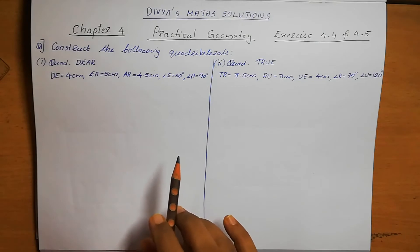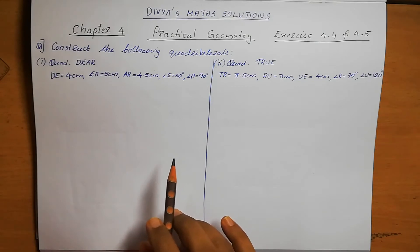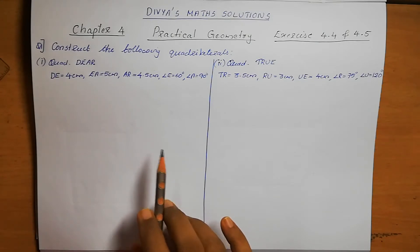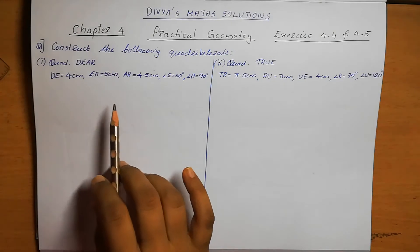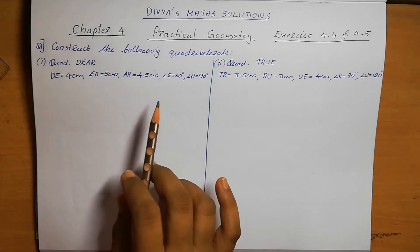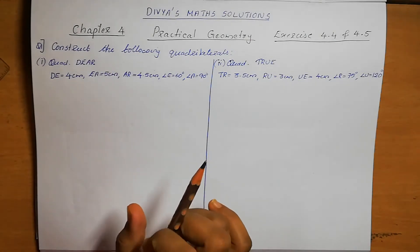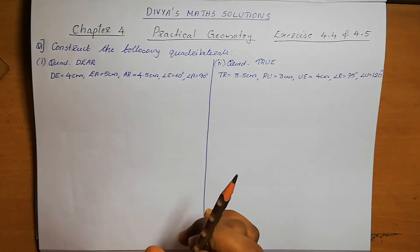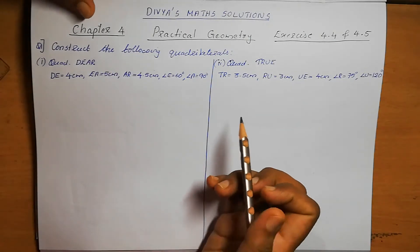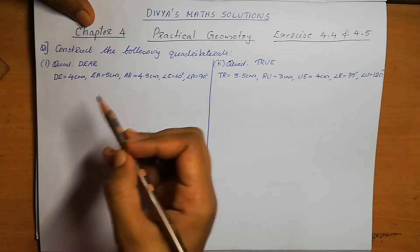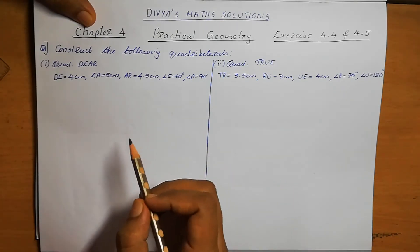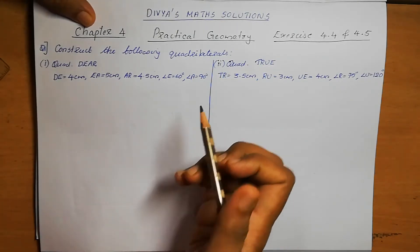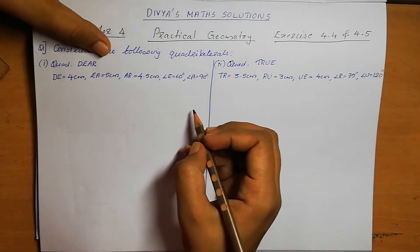Exercise 4.4, Question number 1: construct the following quadrilaterals. The quadrilateral DEAR is given with sides DE, EA, AR and two angles. First, we need to draw the rough diagram. Once you get the question, first draw the rough diagram for all the questions.